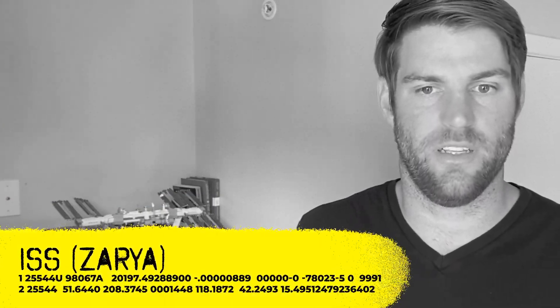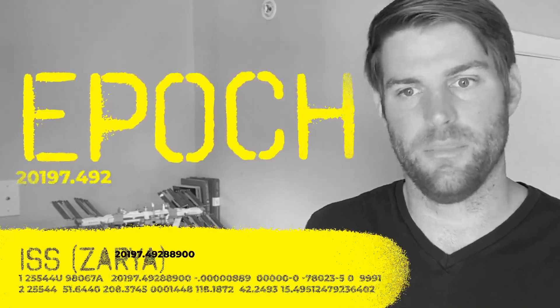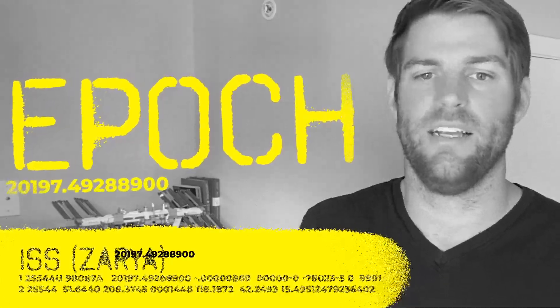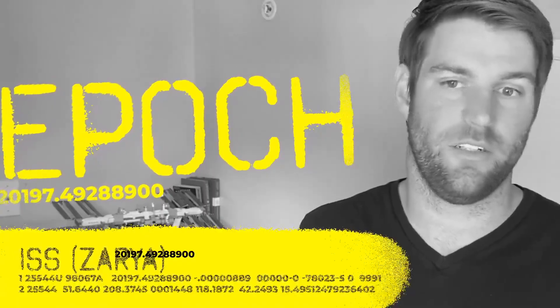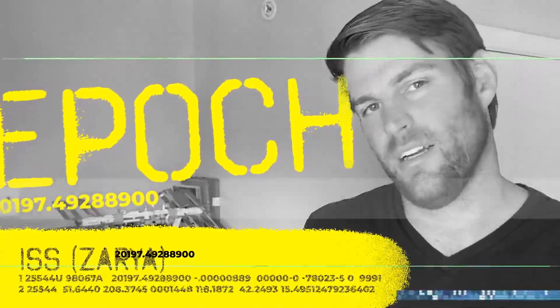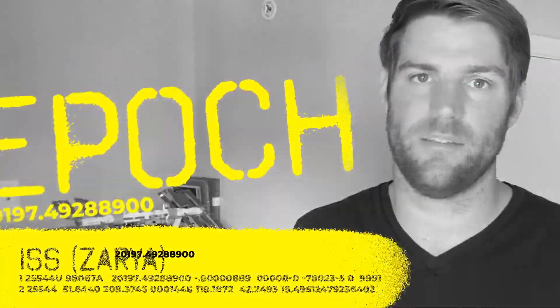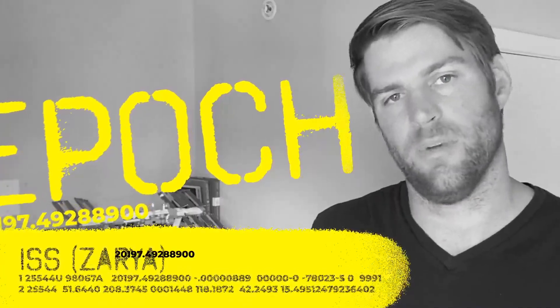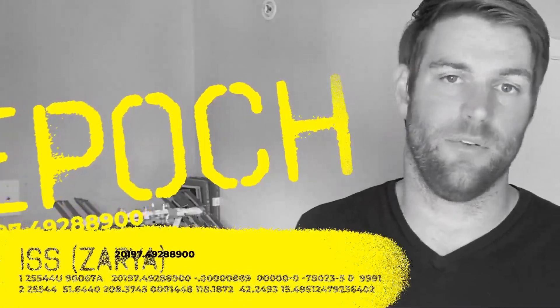The TLE format accounts for this by having a timestamp, or EPIC, built into it to indicate when it was taken. It is then valid for only about a week or two around that EPIC, depending on how important accuracy is for that specific satellite. As a result, they must be constantly updated to keep from going stale. Now we know our orbital parameters.